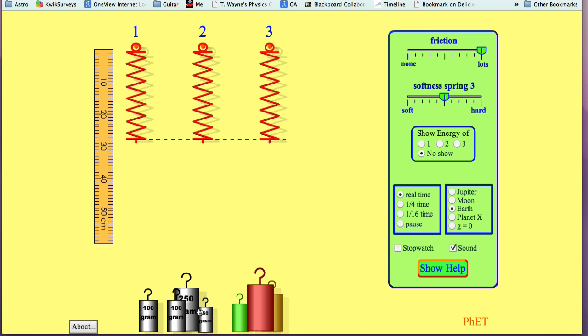And then I can have 100, a 250, and a 50. And then I have the mystery weights over here with the green, the red, and the copper colored.